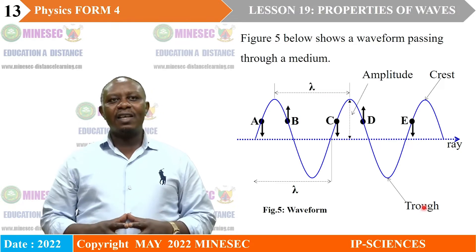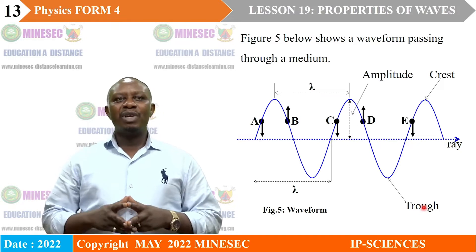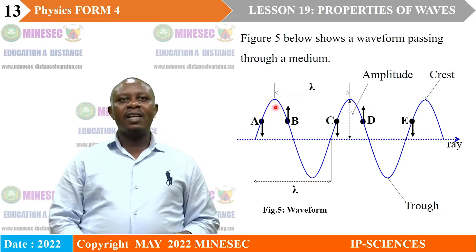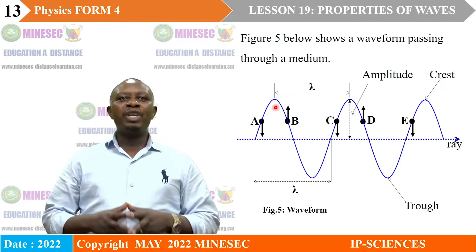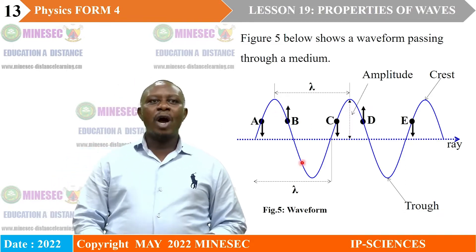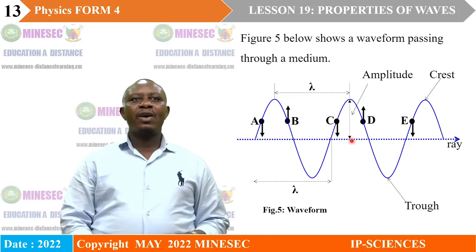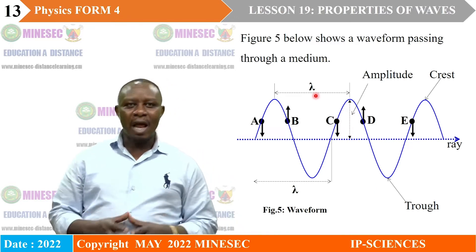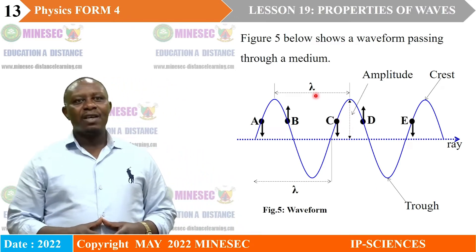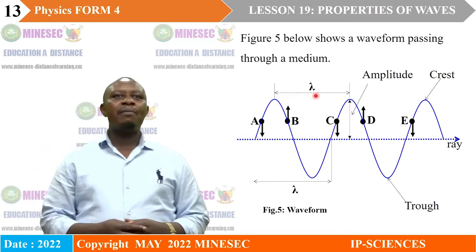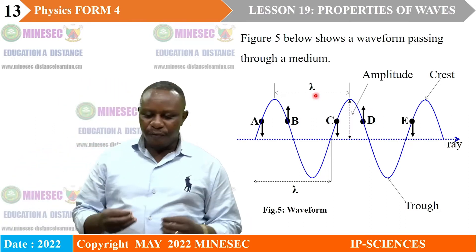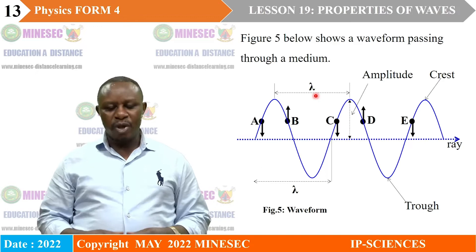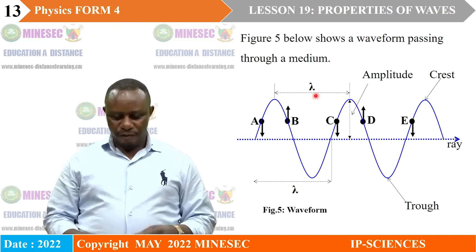The distance between one crest and the next, or between one trough and the next, we call it wavelength — that is lambda. So we are going to use this diagram to define these terms associated with wave motion.